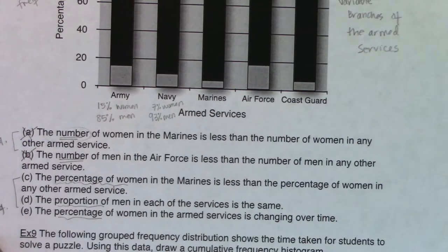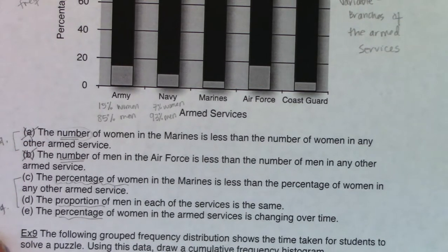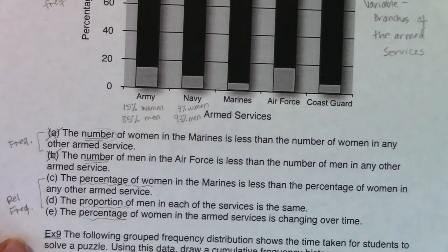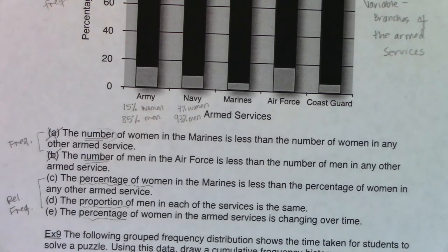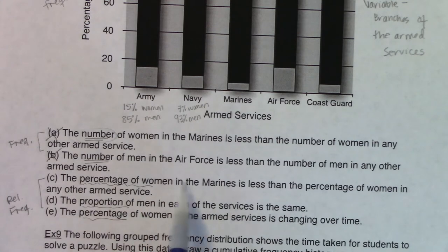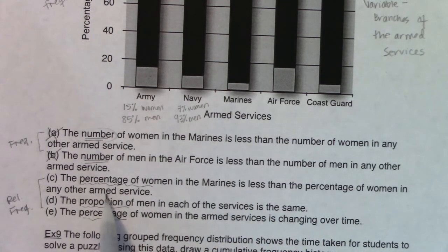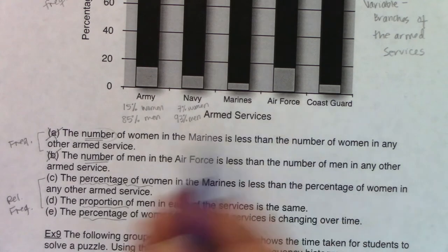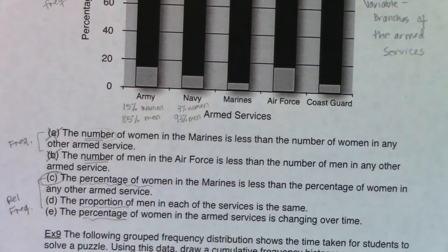Since our y-axis has relative frequencies, we want to talk about relative frequencies. The correct answer is C: the percentage of women in the Marines is less than the percentage of women in any other armed service. It does have the smallest bar, so that's the one we're going with.